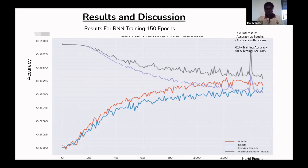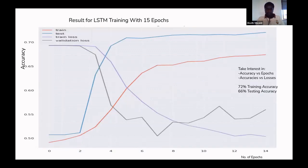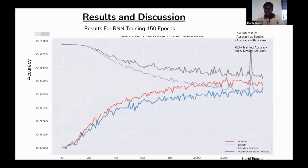I present results for LSTM. The other one's percentage was 61% training accuracy with testing accuracy of 58%. I've just explained what is training accuracy and what is testing accuracy.